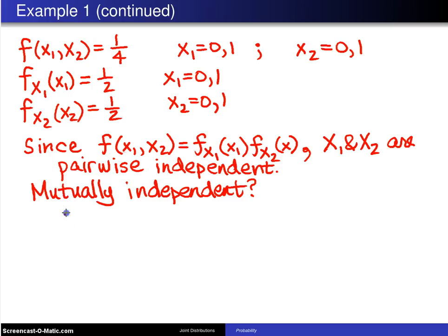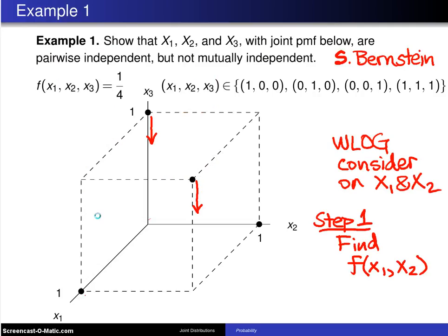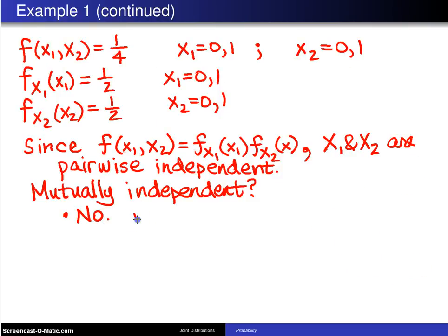And there are actually two different ways of answering this question, and both of those different ways will give you the answer no. The first way of answering it no is to look at this region script A, which are these four dots here where they are defined. That is not what is known as a product space. That is not a rectangular region in three dimensions, and so because of that, we can say no because script A is not a product space. So you can do it by inspection here without calculating marginal distributions and such.